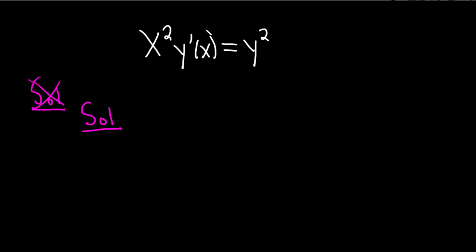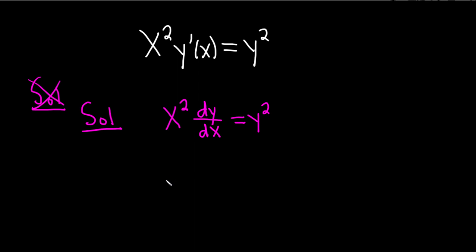Let's start by writing our y prime in a way that is going to make this problem a little bit easier to solve. So let's write this as x squared times dy/dx, and this is equal to y squared. Our goal here is going to be to try to separate the variables — we want to have all the y's together with the dy on one side, and all of the x's together with the dx on the other side.